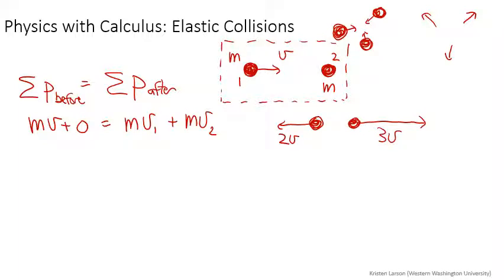The sum of those two things, m times 2v in the backwards direction plus m times 3v in the positive direction, does indeed equal mv. So there's lots of things that could happen.